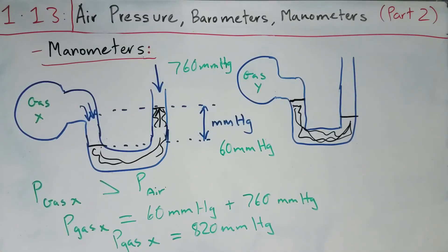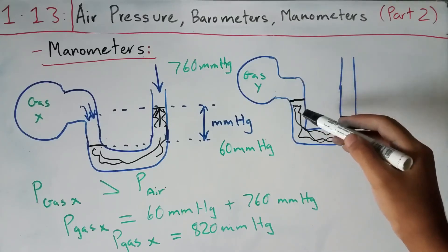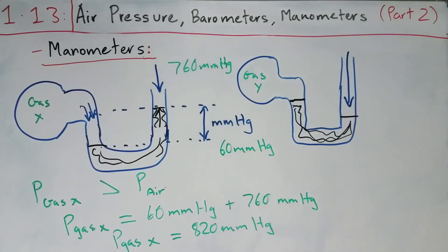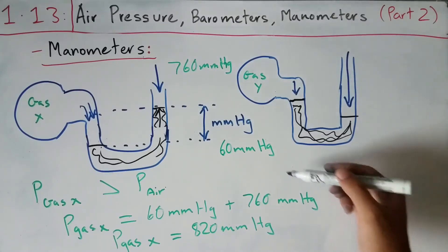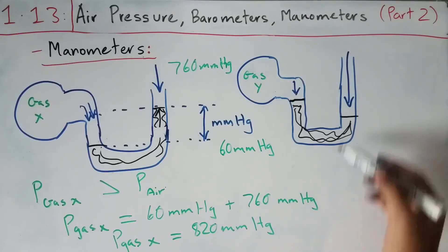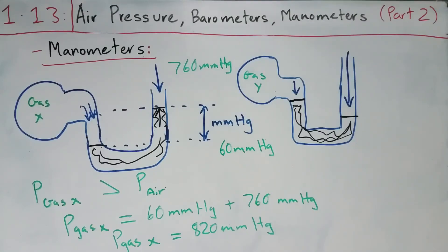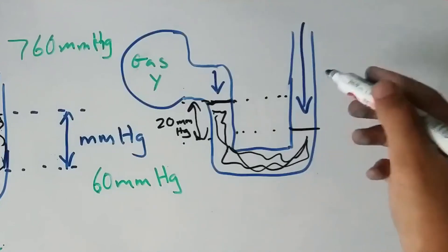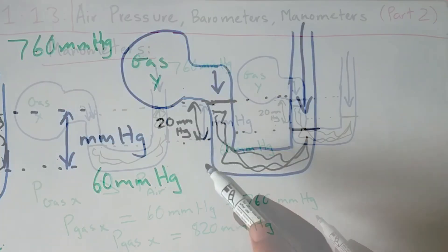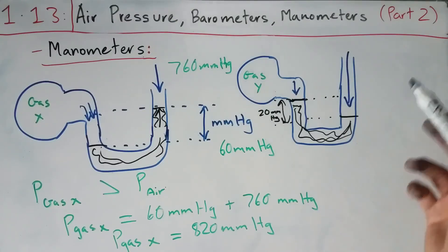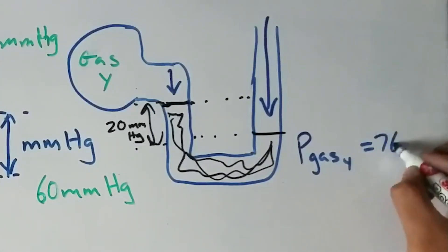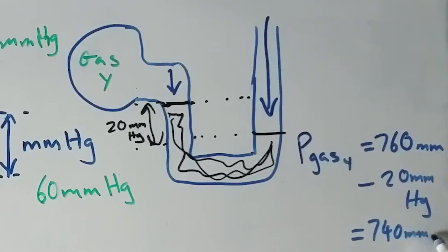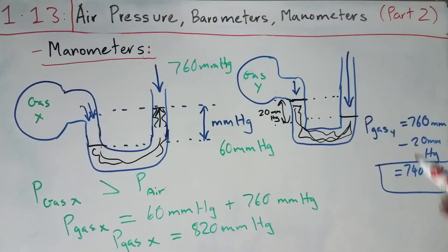In the reverse scenario, if gas Y exerts less pressure than the atmosphere, more mercury is displaced on the gas Y side, meaning atmospheric pressure dominates. In this case you subtract the height difference from atmospheric pressure to find the gas pressure. If the height difference is 20 mmHg and atmospheric pressure is 760 mmHg, then the pressure of gas Y equals 760 − 20 = 740 mmHg, which is less than atmospheric pressure.